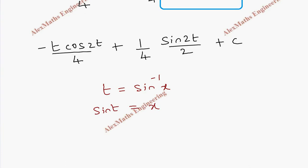We have to replace everything in terms of x. I need everywhere sine t, then only it is possible to replace in terms of x. So I am going to convert cos 2t and sine 2t in terms of sine t.